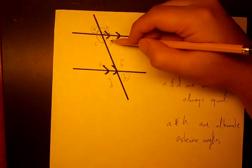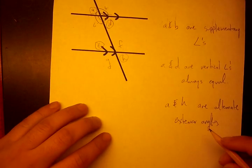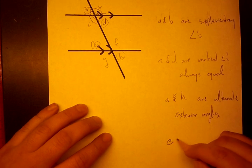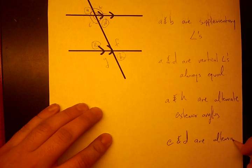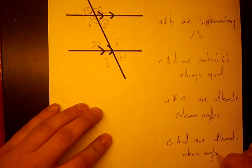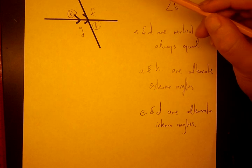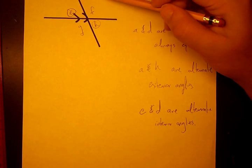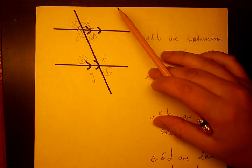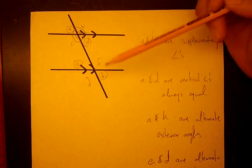And now looking at D and E, these are called alternate interior angles. So E and D are alternate interior angles. And so we have to know something about these. Alternate interior angles are always the same. So D equals E. Or the measure of angle D equals measure of angle E. And same thing with alternate exterior angles. The measure of angle A equals the measure of angle H.